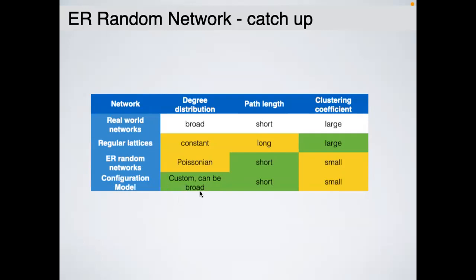For the configuration model: we can have any degree distribution we want; the path length is short (similar to an Erdős-Rényi graph); but the clustering coefficient remains small — it doesn't improve much compared to Erdős-Rényi. So the configuration model solves the degree distribution problem but we still haven't solved the clustering coefficient problem.